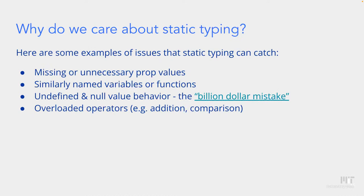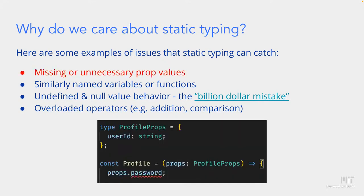Why do we really care about static typing? There are specific bugs we can catch. The first is missing or unnecessary prop values. In React we've been using props as input to components, but we don't really know what's in that props object — anything can be passed in. If we declare a new type `ProfileProps` with `userId` as the only property, and specify that `props` is of type `ProfileProps`, then trying to access a prop like `password` that doesn't exist in that type will throw an error, ensuring we're passing the right props to the right components.